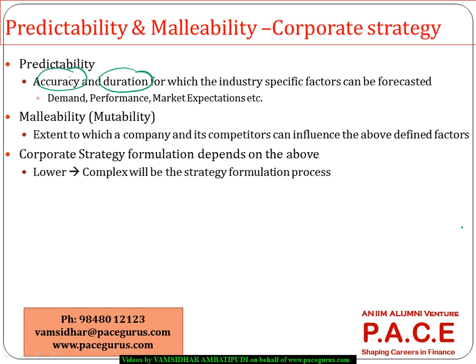Similarly, malleability — sometimes people use the word mutability — is the extent to which I, as a company, or a company along with a couple of competitors, can influence those above factors. Can a company influence demand? Can a company or one or two of its competitors influence market expectations? That is what malleability is. There could be industries where malleability is very high, whereas it may be very low in others.